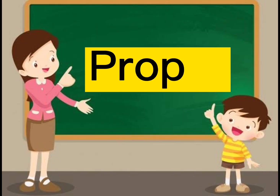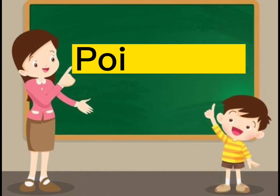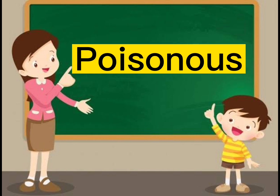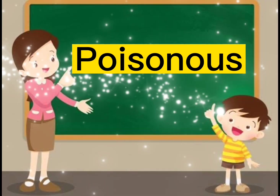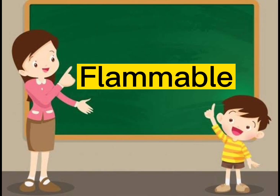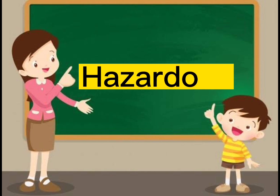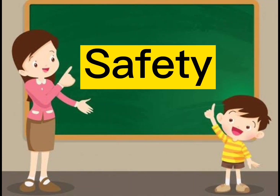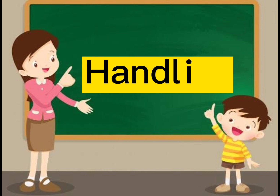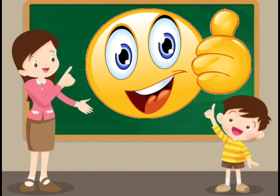The first word is 'proper.' Now it's your time to read. Proper! The second word is 'poisonous.' Please read the word again. Poisonous! The third word is 'flammable.' Can you read it again? Flammable! The next word is 'hazardous.' Hazardous! The fifth word is 'safety.' Can you say it again? Safety! And the last word is 'handling.' Handling! Kids, you did a great job!